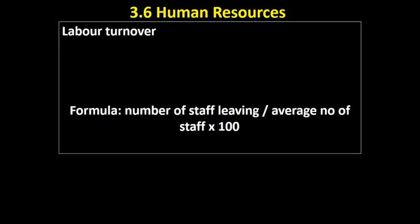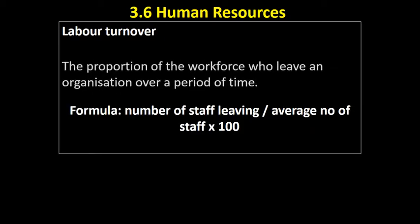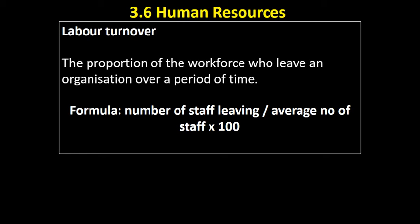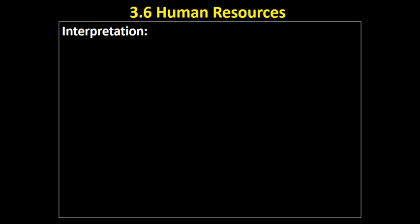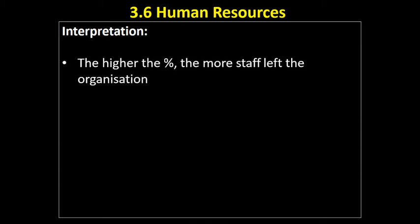You need to be able to interpret these figures, analyze them, track them over time, and explain what they're telling you about an organization. Labor turnover is the proportion of the workforce who leave an organization over a period of time — the number of staff who decide to leave a business, whether they resign or move on to new jobs. The formula is: number of staff leaving divided by the average number of staff, times 100, expressed as a percentage. For example, if the average workforce is 10 and two leave, labor turnover is 20%.